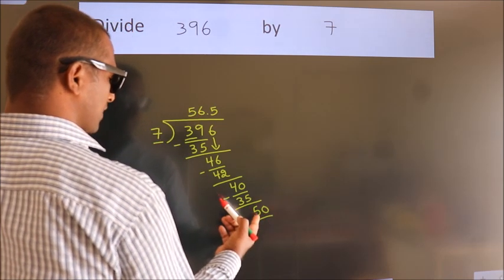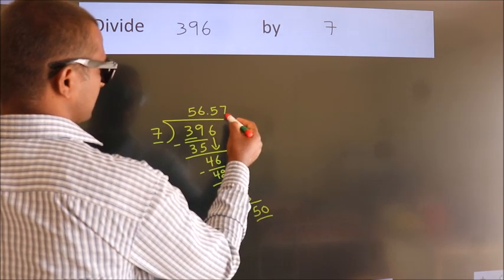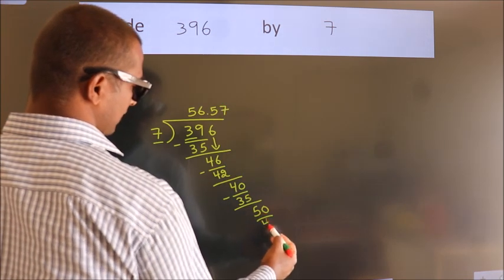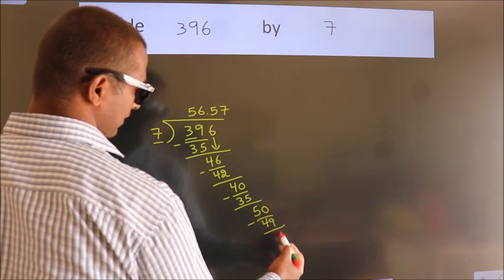A number close to 50 in the 7 table is 7 sevens, 49. Now we subtract. We get 1.